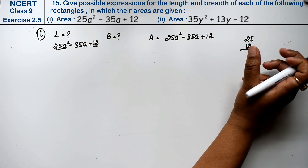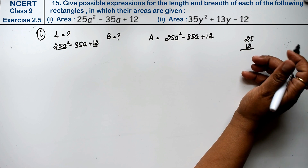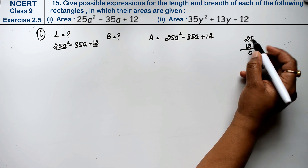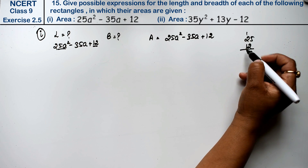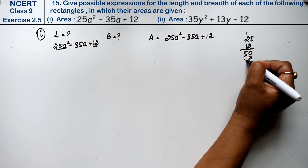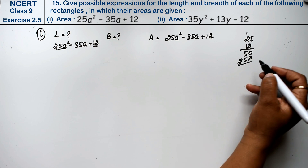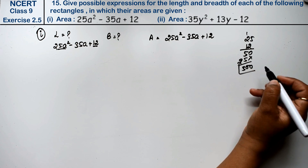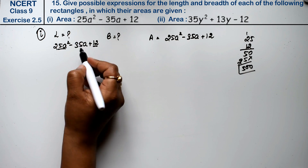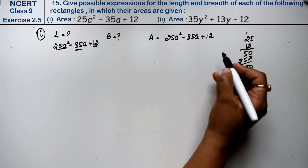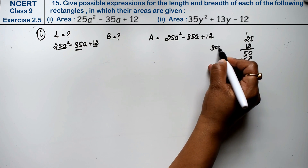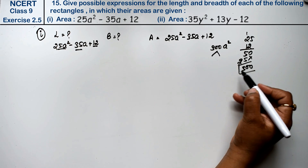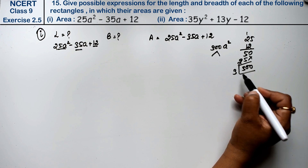25 into 12 gives us 300. We need two factors of 300 whose sum (or difference) gives minus 35. So we have 300 to factorize. Let's find the right factor pair.